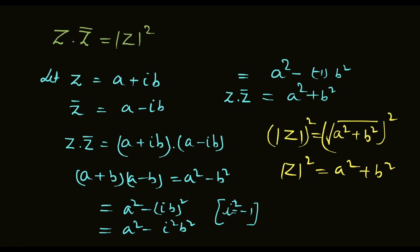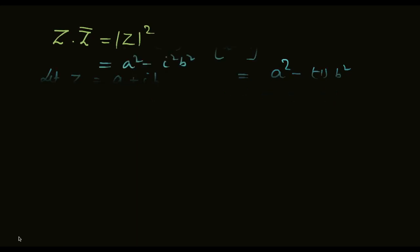तो a square plus b square is z into z conjugate. It means that modulus of z whole square equal to z into z conjugate. This completes the proof of the property.